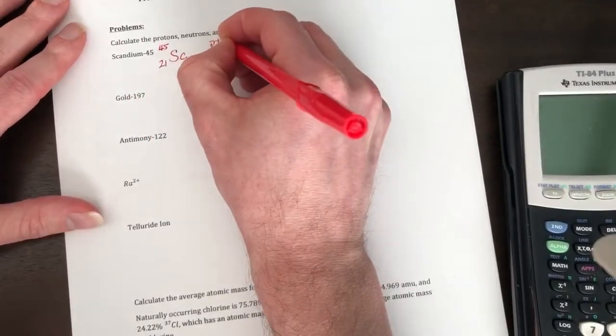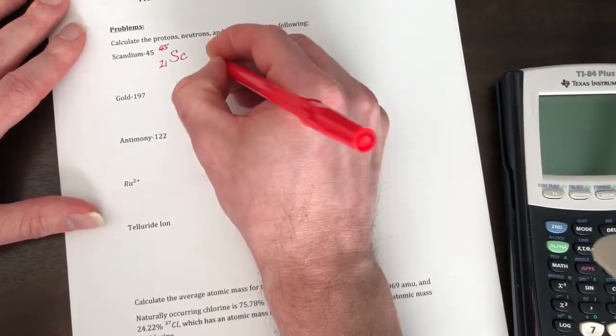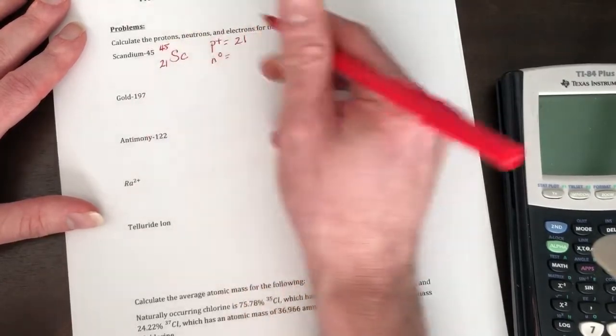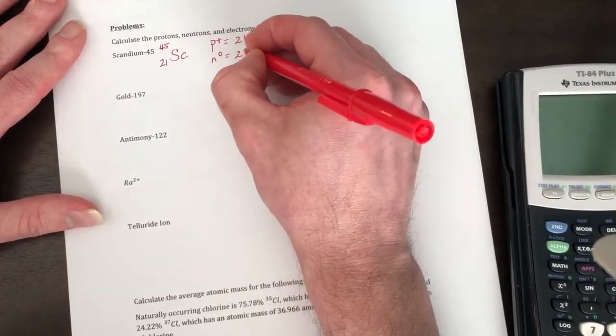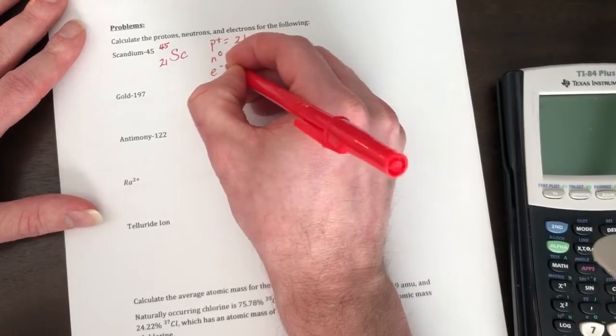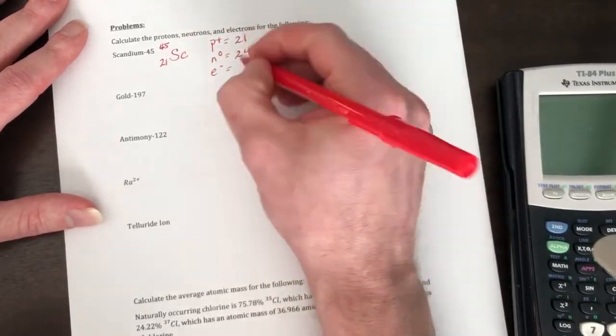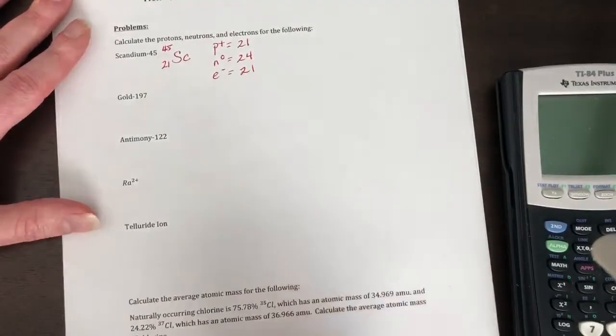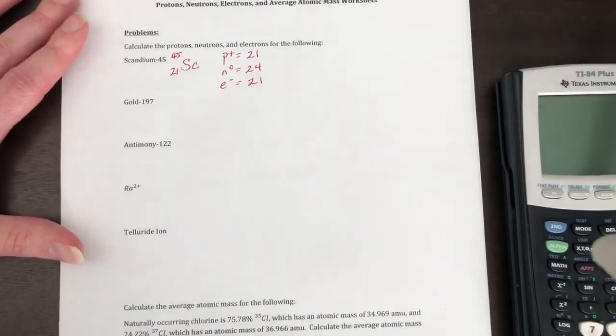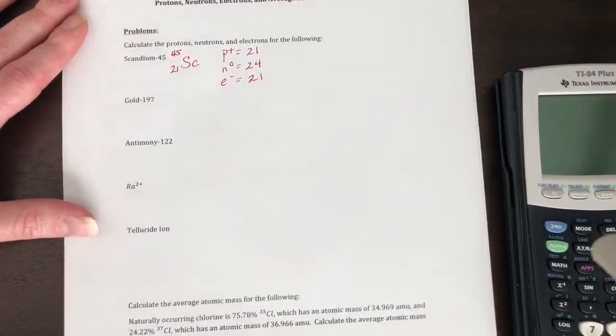So your protons is 21. Your neutrons, it's gonna be 45 minus 21, which is 24. And your electrons is gonna be equal to 21. So you notice that there's no charge on this, so we don't change the electrons.